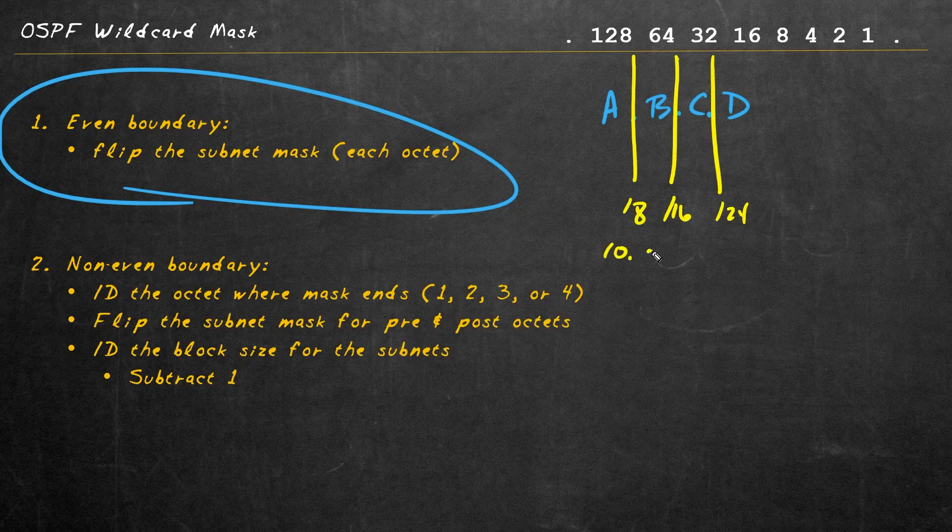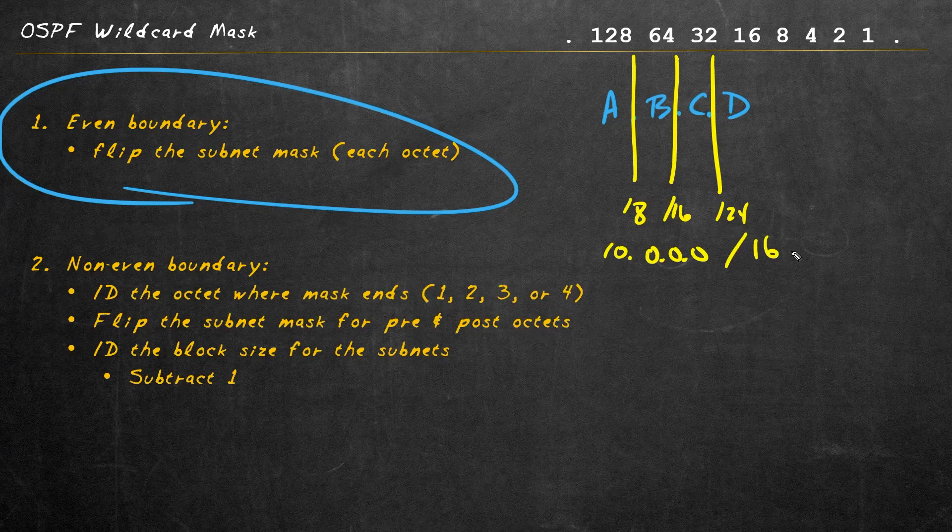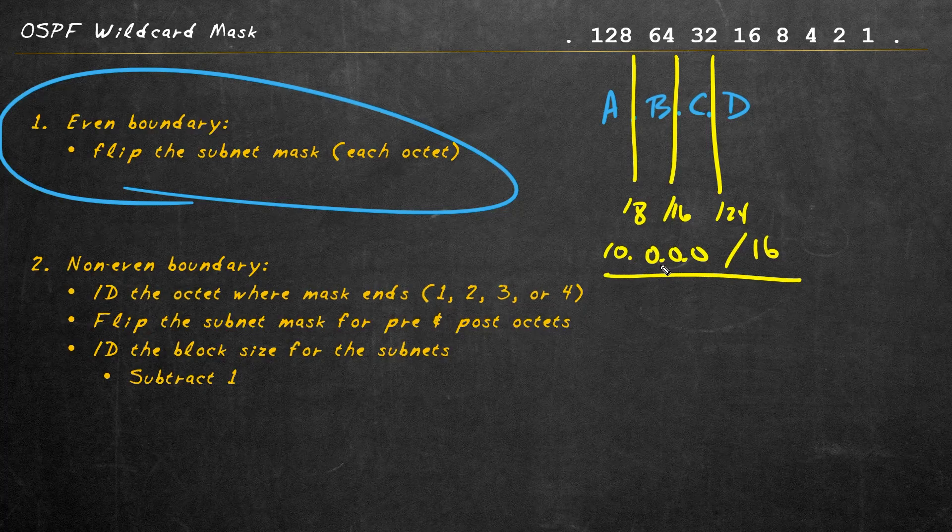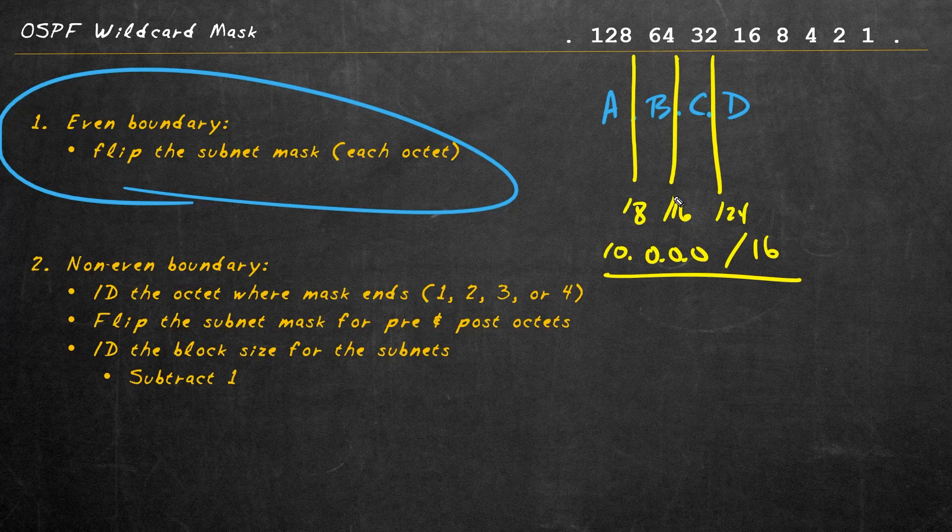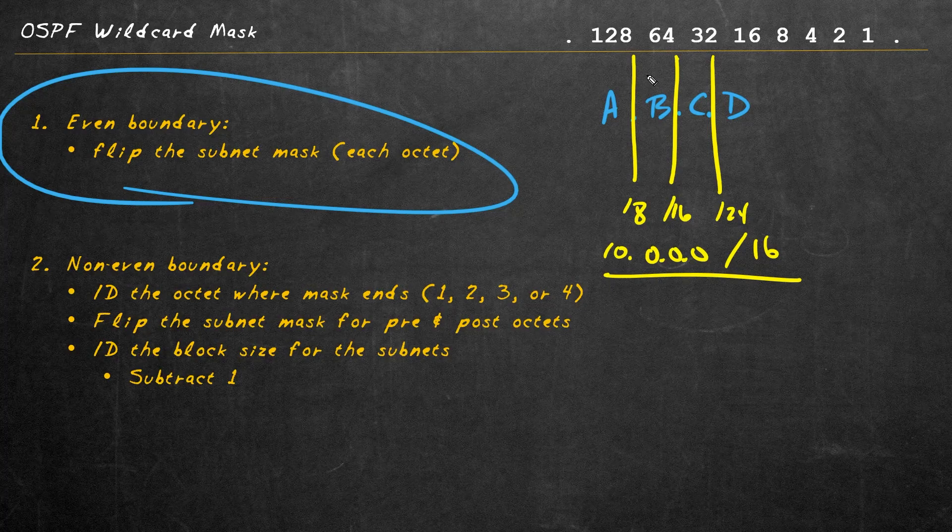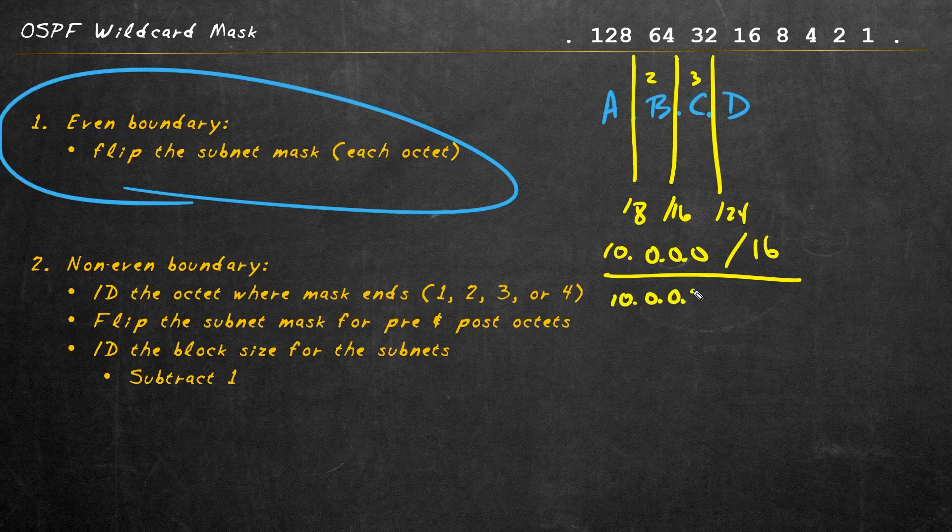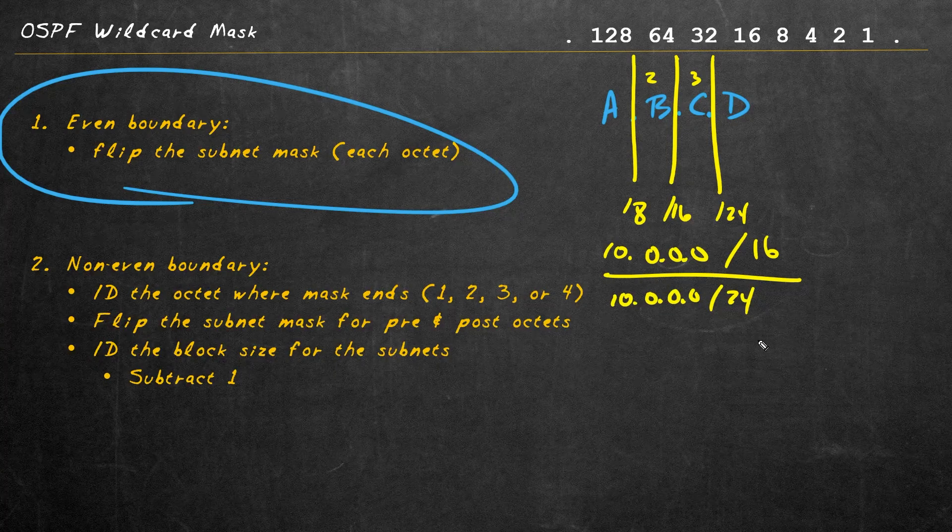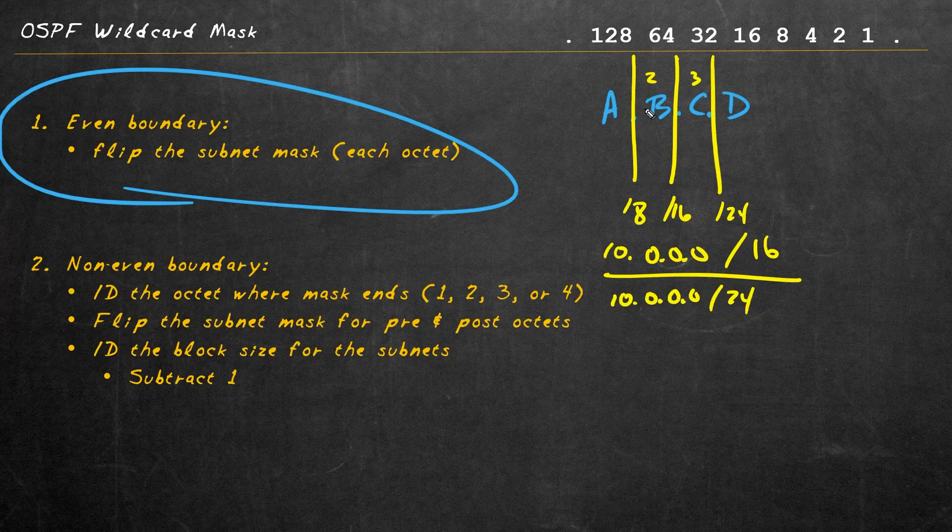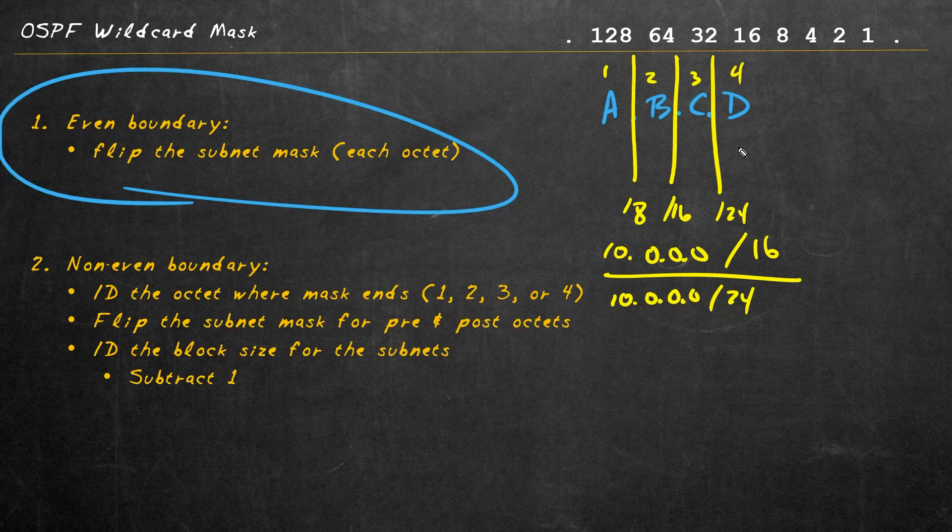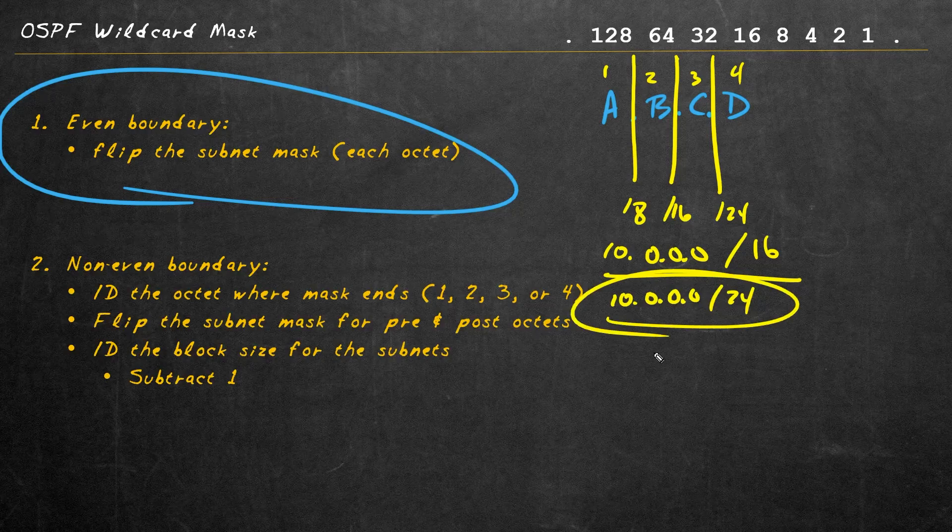So a network like 10.0.0.0 with a slash 16 would be an example of a network, the 10.0 network, which has the dividing line cleanly between two octets, between the second and the third octet right here. Or if we had the network 10.0.0.0 with a 24 bit mask, that again is an example of a nice clean break between the first, second and third octets and the fourth octet.